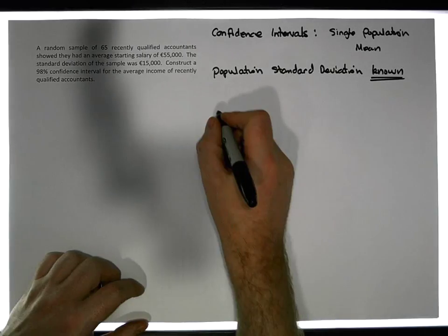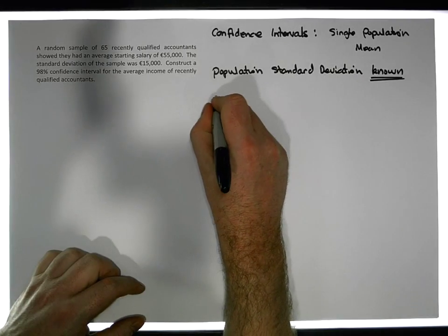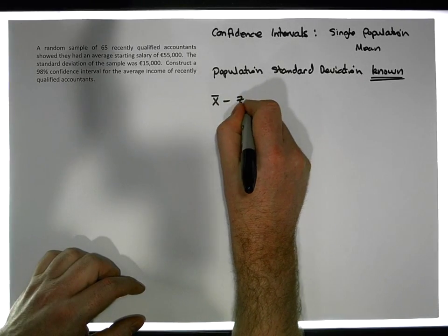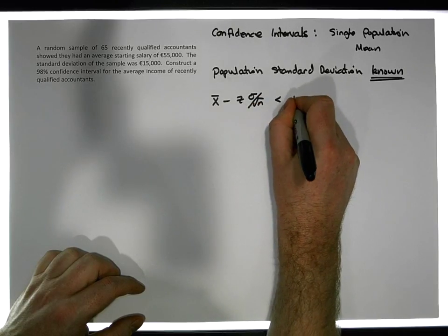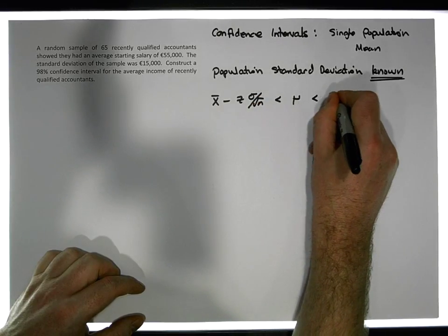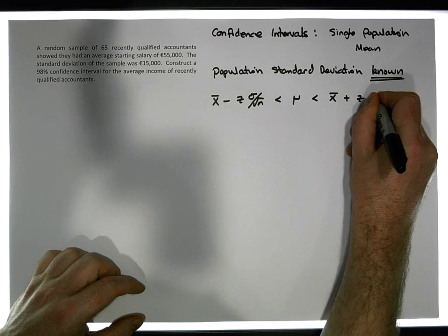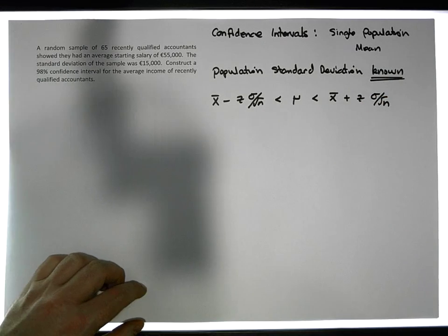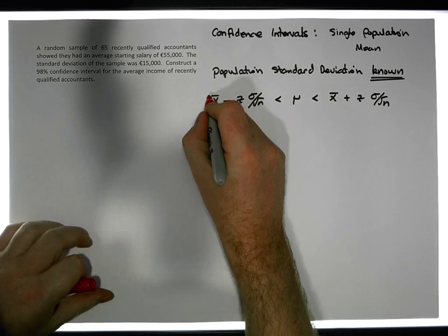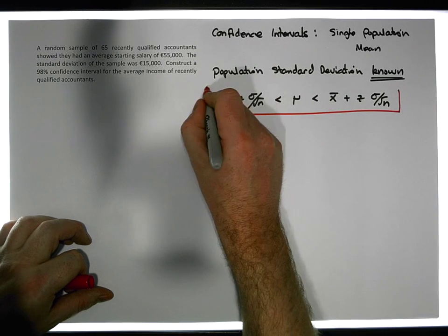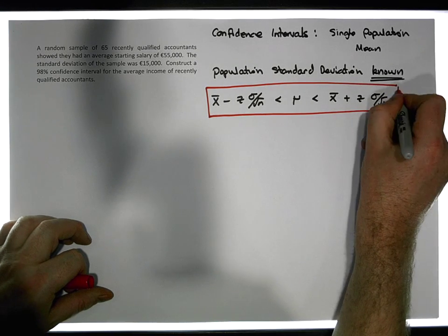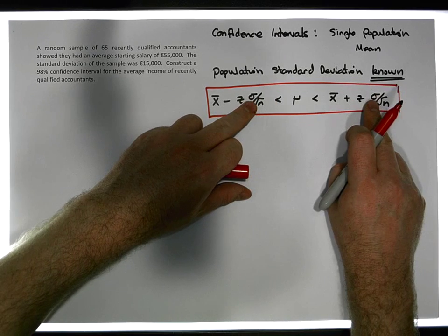If we do know the population standard deviation, the formula is based off a z-distribution. The formula is: x-bar minus z times sigma over the square root of n must be less than the population mean, which must be less than x-bar plus z times sigma over the square root of n. We use this particular formula when we know the population standard deviation.